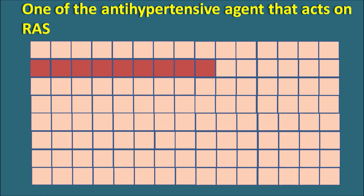These are the blocks and let us see the different clues within them. First, let us take this row — the question is: one of the antihypertensive agents that acts on the renin-angiotensin system. We have to fill in the drug name which is an antihypertensive and acts on the renin-angiotensin system.